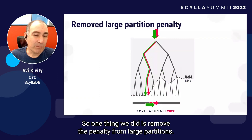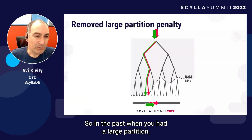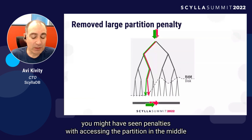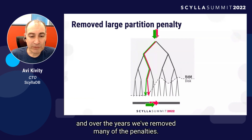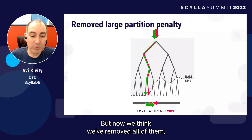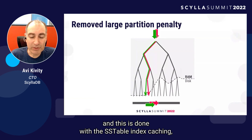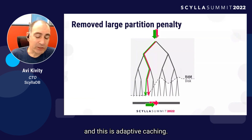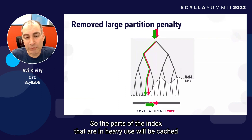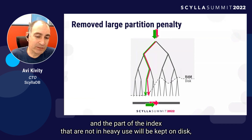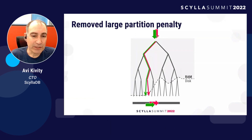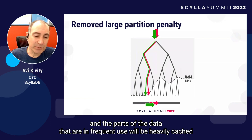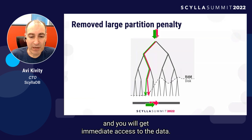One thing we did is remove the penalty from large partitions. In the past, when you had a large partition, you might have seen penalties with accessing the partition in the middle or scanning it. Over the years we've removed many of the penalties, but now we think we've removed all of them. This is done with SSTable index caching — adaptive caching — so the parts of the index in heavy use will be cached, the parts not in heavy use will be kept on disk, economizing memory use, and the parts of the data in frequent use will be heavily cached for immediate access.